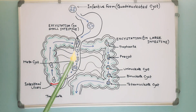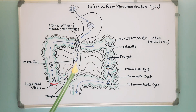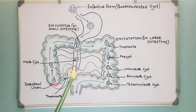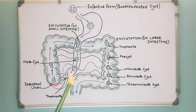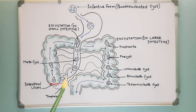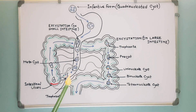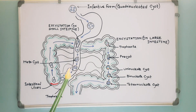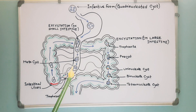The tetranucleated trophozoite eventually undergoes a series of nuclear and cytoplasmic divisions. As a result, eight small metacystic trophozoites are produced.